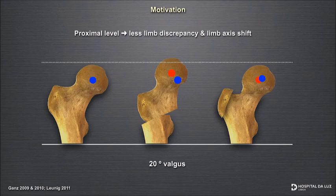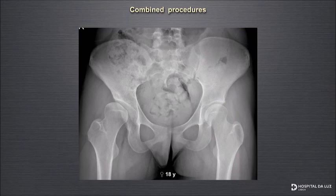You can also combine it with acetabular reorientation procedures, doing both procedures at the same time. This is a case of a young female patient with a severe dysplastic hip. There is lateral migration of the femoral head, she has a high-riding fovea, which is diminishing quite dramatically the area of contact between the two articular surfaces, and as a consequence she has a cyst — already an osteoarthritis cyst.